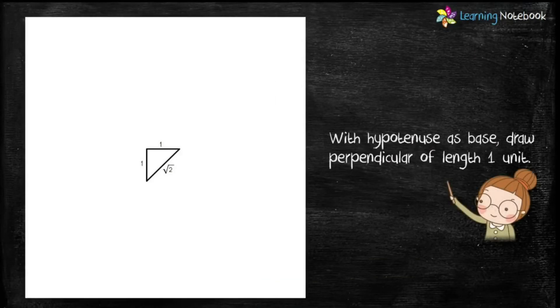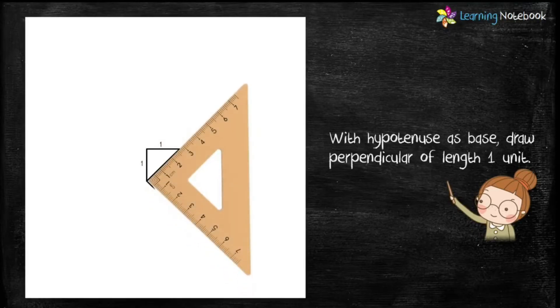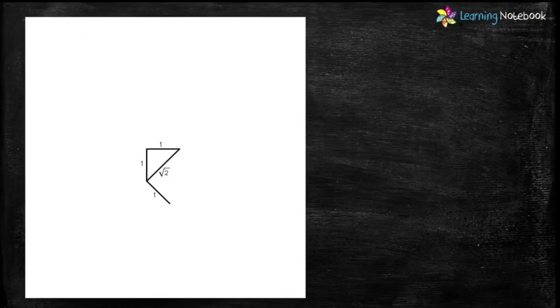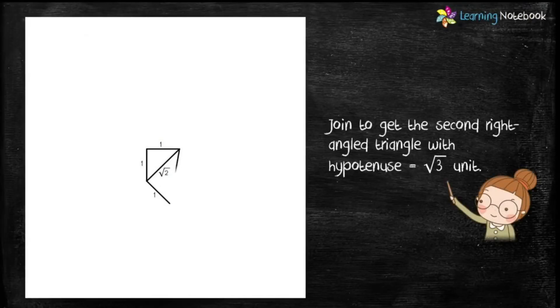Next, with the help of a set square and hypotenuse as base, draw a perpendicular of length 1 unit as shown here. Now let's join them to get the second right-angled triangle with hypotenuse equals to root 3 units.